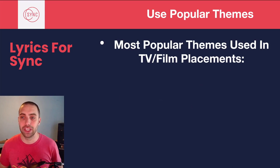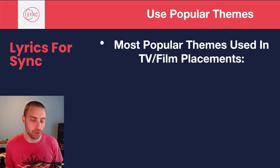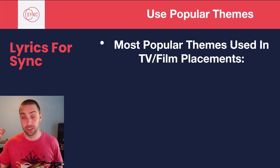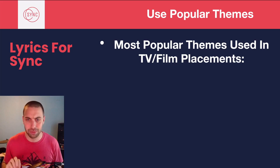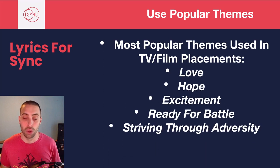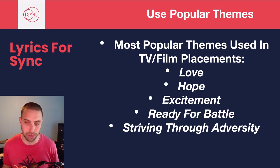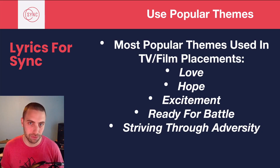Now I want to give you the most popular themes you could possibly find in TV and film placements. I've been in this business for 13 years, I've seen a lot of films and TV, I've watched what kinds of tracks get placed. Based on all the custom opportunities I've received over the years, these are the emotions, moods, and stories that are going to show up over and over again on TV. You'll find some exceptions, but if you just stick with these, you will find homes for your tracks. So: love, hope, excitement, ready for battle, and striving through adversity. With love — that could be falling in love, losing love, longing for love, anything about love. Love is the most popular topic that's ever existed in the history of mankind.